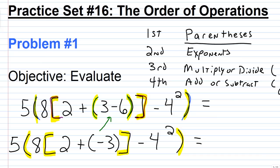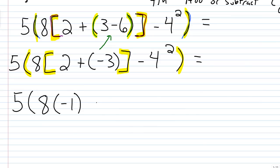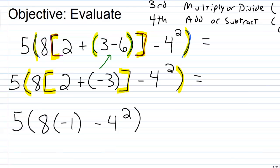Now we do 2 plus negative 3, which gives us negative 1. We replace that, giving us: 5 times the quantity — 8 times negative 1 — minus 4 squared. The parentheses around negative 1 are just to make clear it's negative 1.